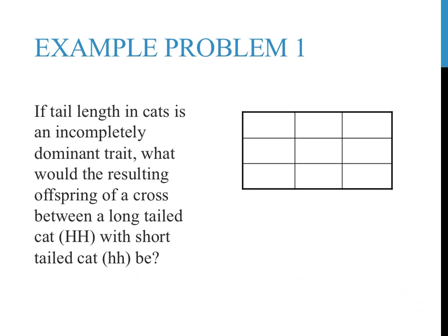The first example problem here reads: if tail length in cats is an incompletely dominant trait, what would the resulting offspring of a cross between a long-tailed cat, capital H capital H, with a short-tailed cat, lowercase h lowercase h, be? This is the simplest type of incomplete dominance problem, as the genotypes for both parents are provided. The first thing I would always do is to write out the different allele combinations and the resulting phenotypes off to the side.